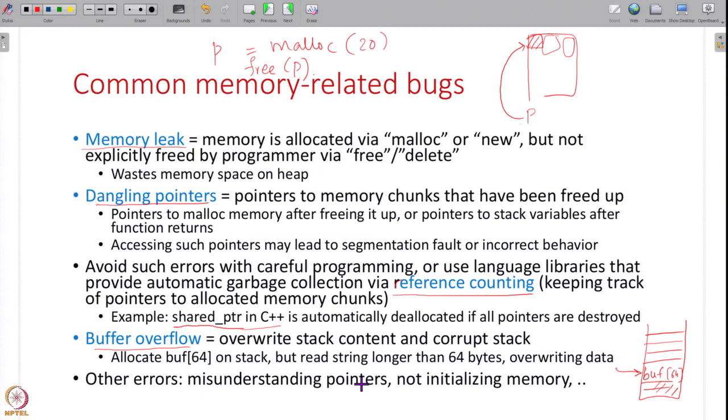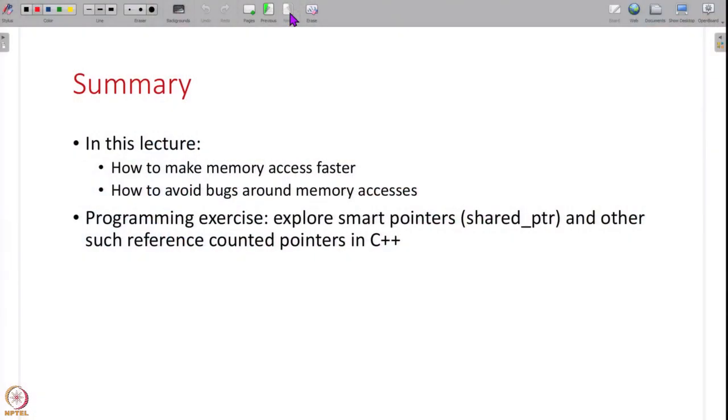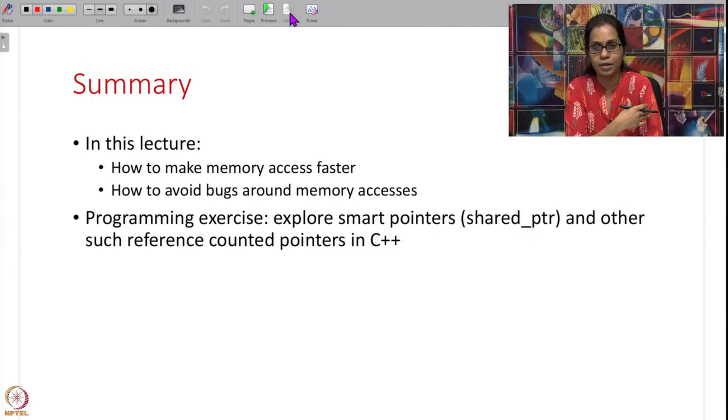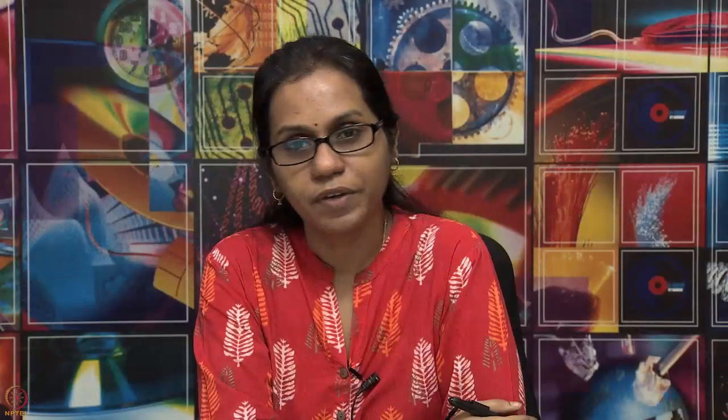There are many other memory errors related to pointers — understanding what a pointer stores, correctly initializing memory, and so on. A good introductory programming course should have explained these clearly. In summary, this lecture recapped all the steps in memory access — from CPU caches to TLB, MMU, and page faults — and how to make each step faster to improve application performance. We also covered common memory bugs and how to avoid them. As a programming exercise, explore smart pointers in C++ to avoid memory leaks and dangling pointers. Next week we begin a new topic: the IO subsystem covering files, networks, and more.